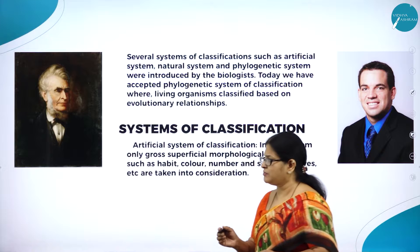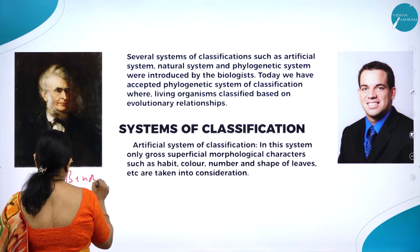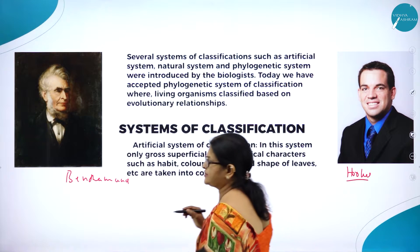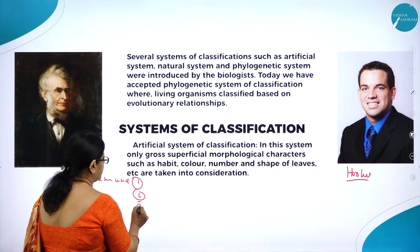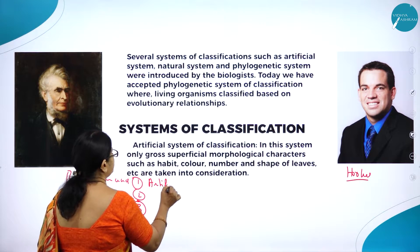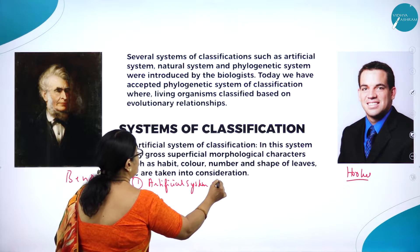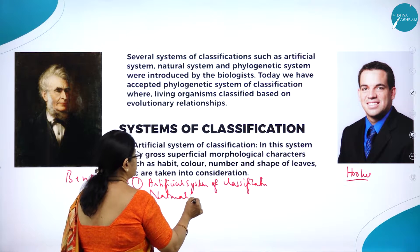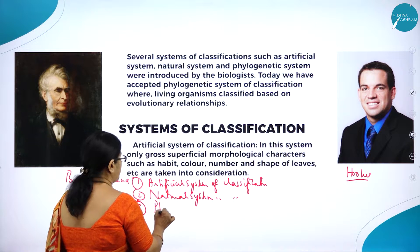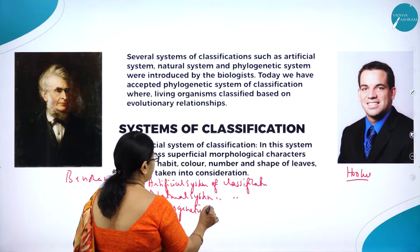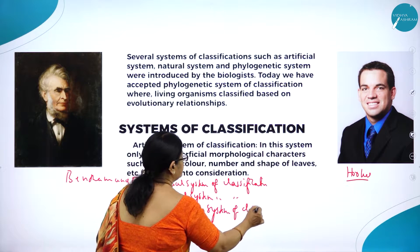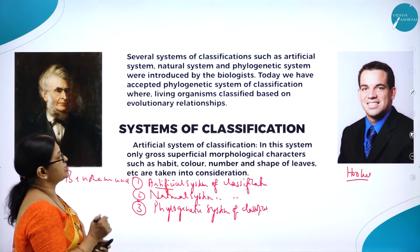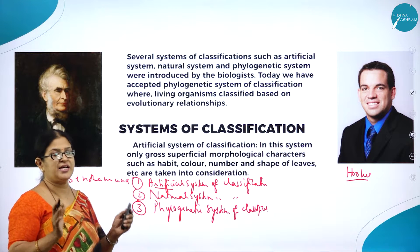Here you can see two great scientists, Bentham and Hooker. Three systems of classification were put forward: the artificial system of classification, the natural system of classification, and the phylogenetic system of classification. The artificial system of classification was put forward by Aristotle, but it does not satisfy many criteria for classifying plants.